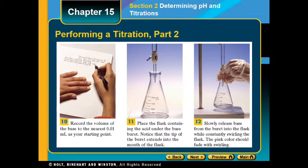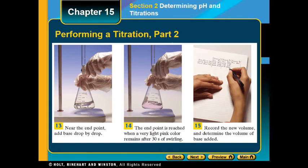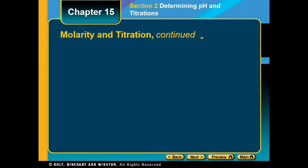Step 11: Place the flask under your base burette. Step 12: Slowly release base from the burette into the flask, constantly swirling. You may get to a point of adding just one drop at a time — the pink color should fade with swirling. Step 13: Near the end point, add base drop by drop as the pink color starts to linger. Step 14: The end point is reached when a very light pink color remains even after 30 seconds of swirling. Step 15: Record the new volume and determine the volume of base added.